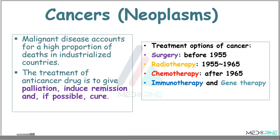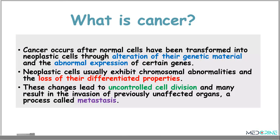There have been a number of treatment options for cancer. Before we go any further, we need to understand what cancer is and how it develops. Cancer occurs after normal cells have been transformed into neoplastic cells through alteration of their genetic material and abnormal expression of certain genes. These cancerous or neoplastic cells exhibit chromosome abnormalities and the loss of their differentiated properties, leading to uncontrolled cell division, which may result in invasion of previously unaffected organs through a process known as metastasis.